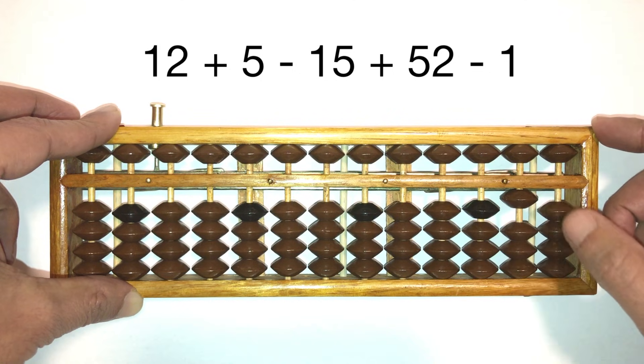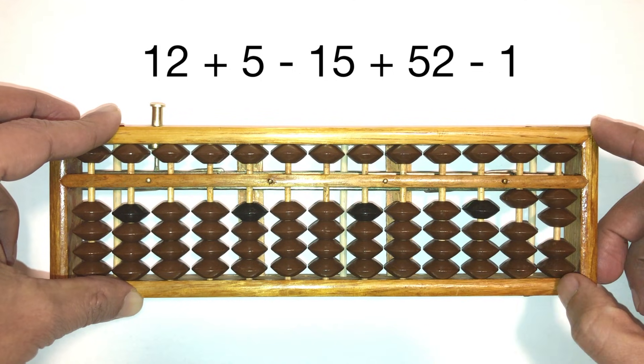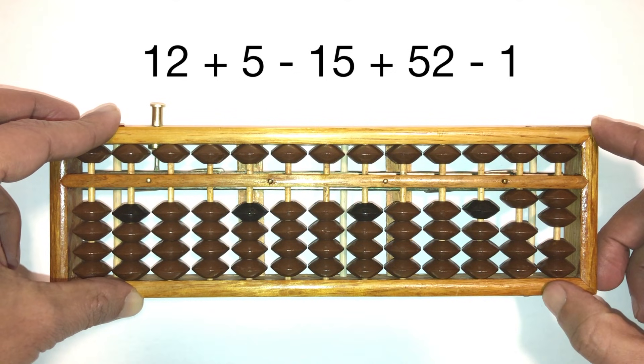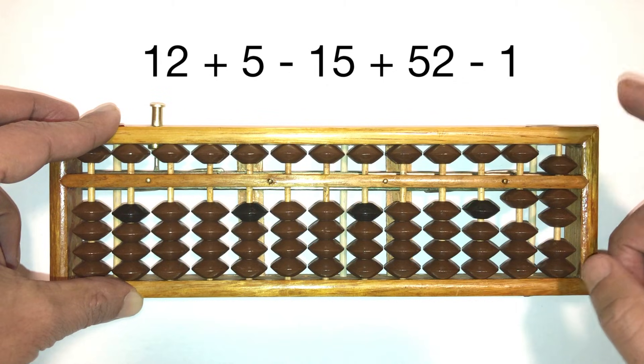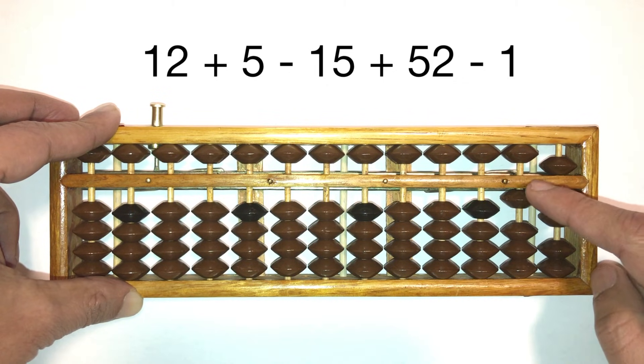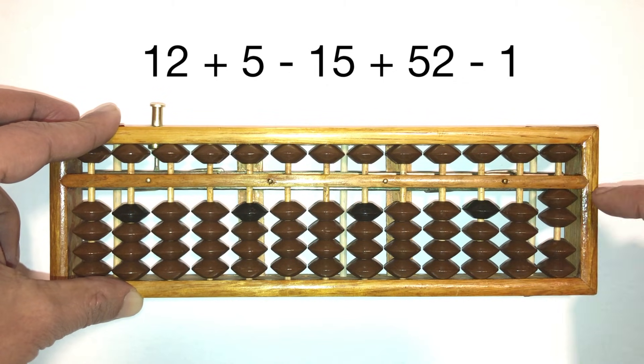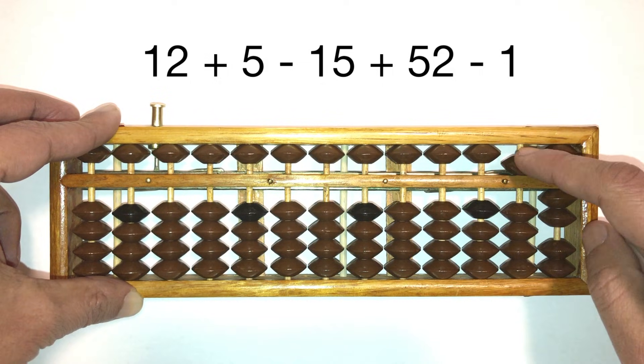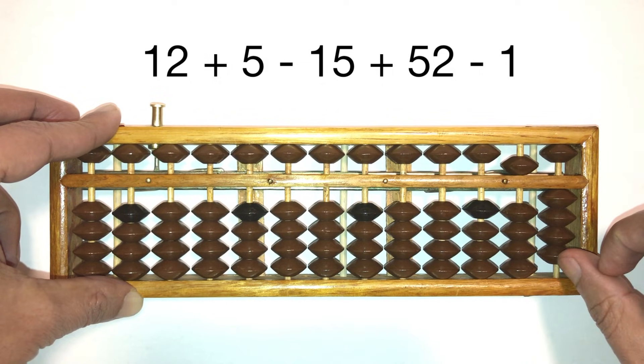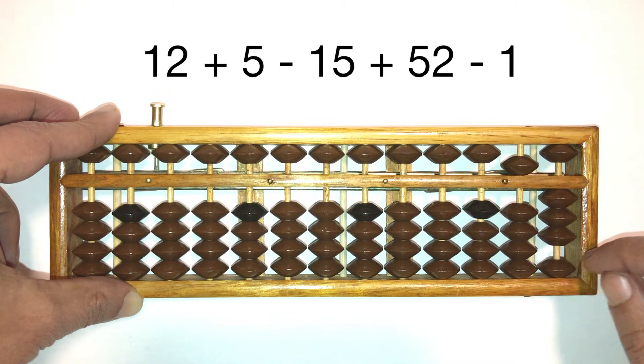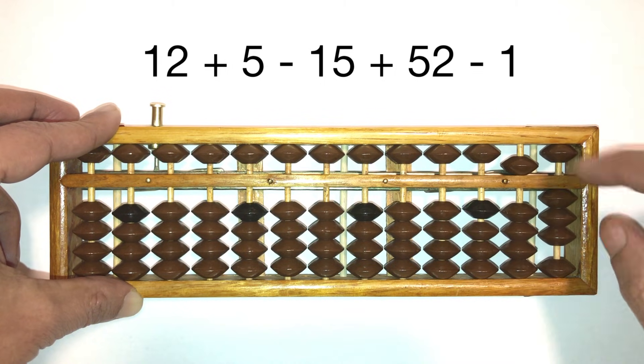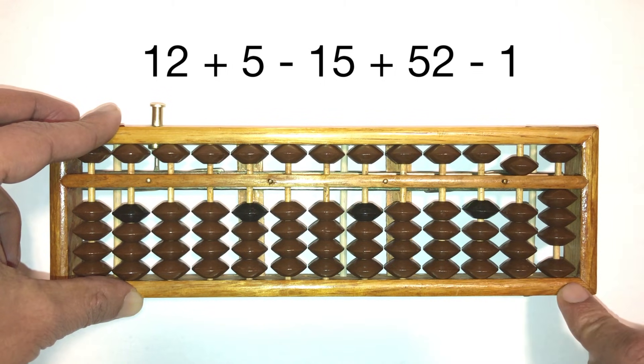So 12. So 10 and 2. So 1 bead in the tens column and 2 beads in the ones column. Plus 5 with my pointer. Minus 15, since we're subtracting, we use our pointer. Plus 52, plus 52, plus 52, minus 1 with my pointer. The answer is 50 and 3. 5, 3, 53.